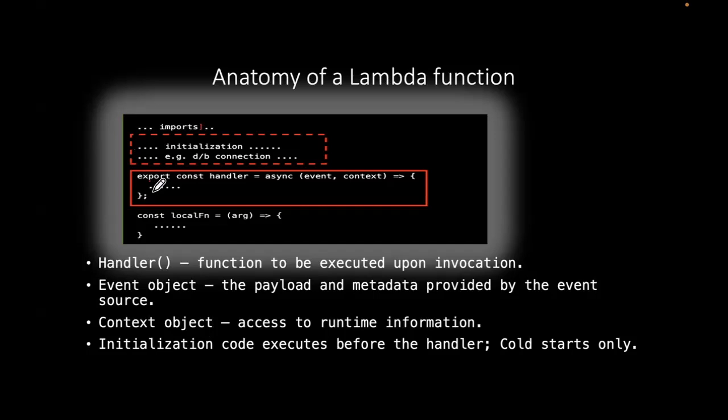When an event occurs, the Lambda service provisions the micro VM, loads in the code, and executes the initialization code first, then the handler. If another event occurs shortly after, the service holds on to the micro VM — it will not re-execute the initialization code because the connections made there are still active; it will only call the handler. The first execution is referred to as a cold start of the micro VM; the second is a warm start. They must occur in quick succession, otherwise the micro VM has been thrown away and we start all over again.